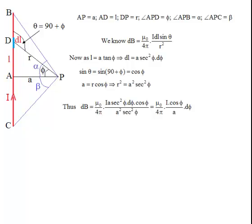Next we integrate. The upper limit is angle BPA which is α, and the lower limit is APC which is -β (negative because it's in the downward direction). Our integral limits are from -β to α.